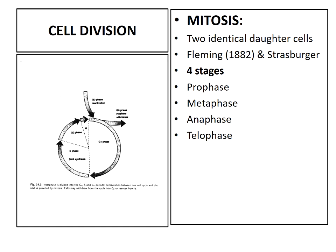Mitosis is divided into four main stages: prophase, metaphase, anaphase, and telophase. Before entering the divisional stages, the cell undergoes a rest period called interphase. Interphase is the longest period in the cell cycle and shows metabolically active processes involving proteins, RNA, DNA, and enzymes necessary for the future divisional stages. Interphase is divided into three sub-stages: G1 phase, S phase, and G2 phase.